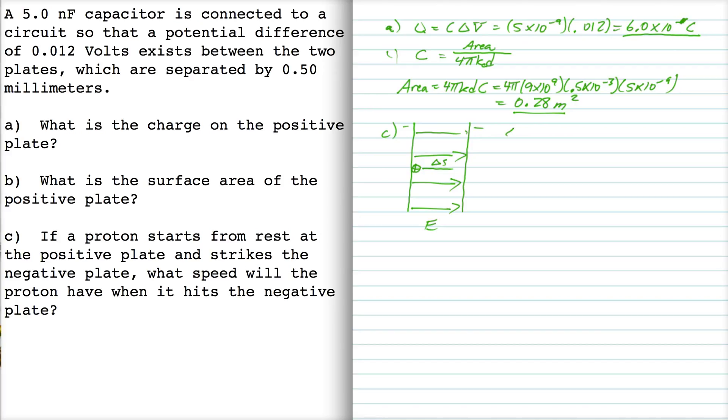Now the delta S that it travels, the distance that it travels between the plates is 0.5 millimeters. So we want to know the speed the proton will have when it hits the negative plate. The easiest way to do this would be work energy, right, to say that the sum of the works done by all the forces in the problem is equal to the change in kinetic energy.